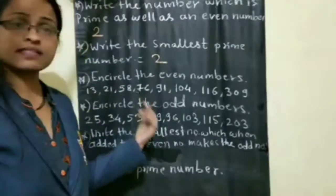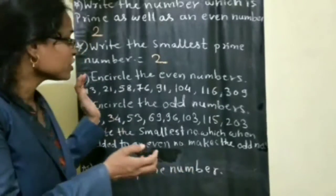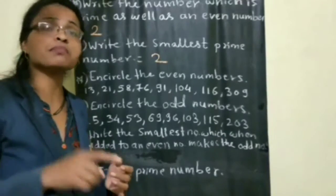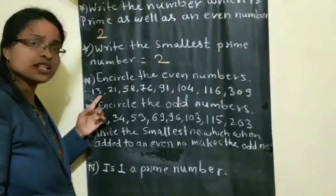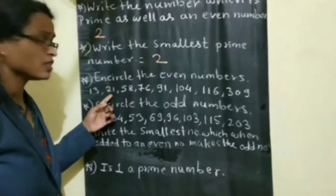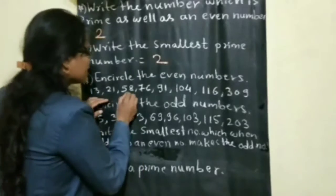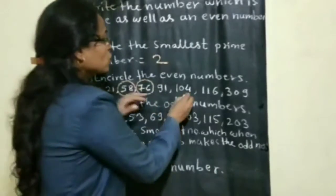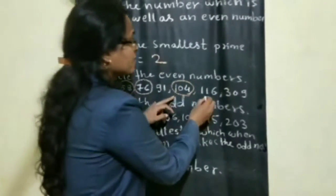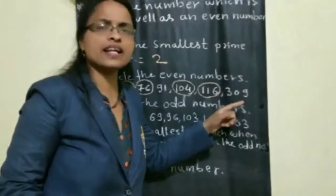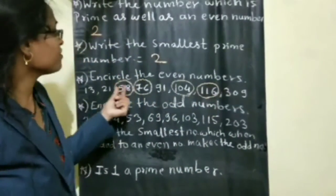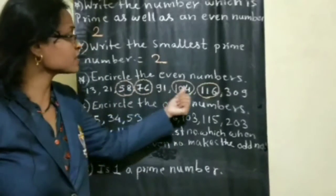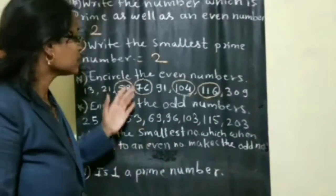Next: circle the even numbers from the given group. You should know what is meant by even number. 13 — no. 21 — no. 58 — yes, it is an even number. 76 — yes, even number. 91 — no. 104 — even number. 116 — even number. 309 — no. If the number is large, observe the one's place digit: if it is 8, 6, 4, or any even digit, those are even numbers.